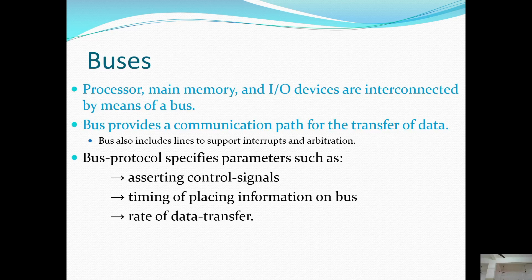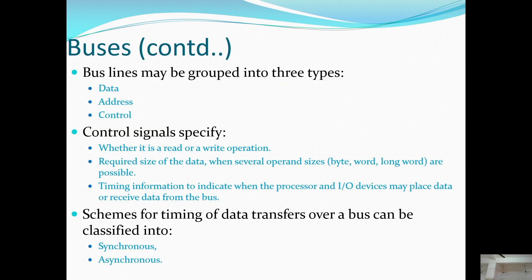Bus protocol specifies parameters such as accepting control signals, timing of placing information on the bus, and rate of data transfer. Bus lines may be grouped into three types: data, address, and control. Control signals specify whether the operation is a read or write.